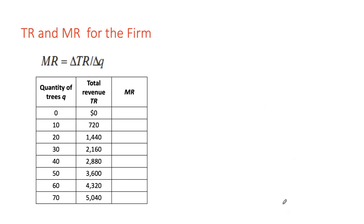Another way to look at profit maximization is through marginal analysis. Marginal revenue is the change in total revenue because of one additional unit sold. As Noelle produces more output, her total revenue rises. As production increases from 0 to 10 trees, total revenue increases by $720 — divided by 10 units, marginal revenue is $72. From 10 to 20 trees, revenue increases by $720 again, so marginal revenue is again $72.